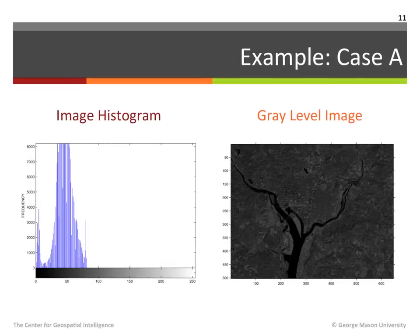To demonstrate these principles, consider the following examples. In all these examples, a satellite image of the Washington DC area was used, containing 256 gray levels ranging from 0 to 255. Consider case A. In this case, the image histogram on the left is concentrated at low gray values and is narrow and not well spread throughout the dynamic range of the image. As a result, the image on the right is very dark and has poor contrast.